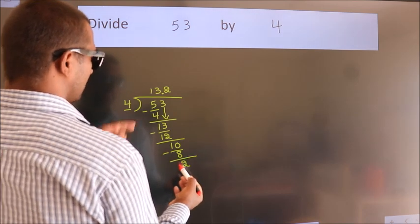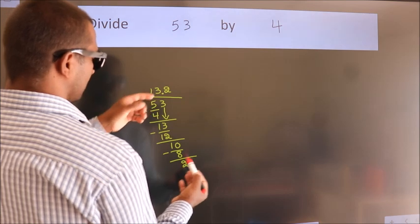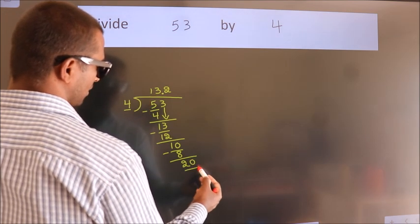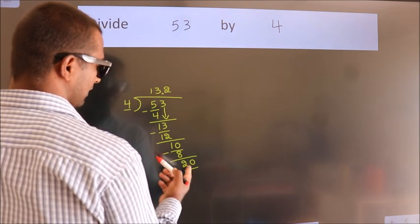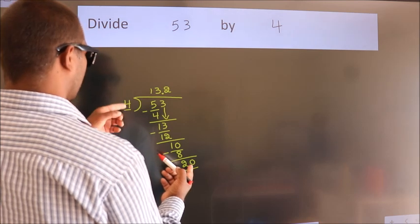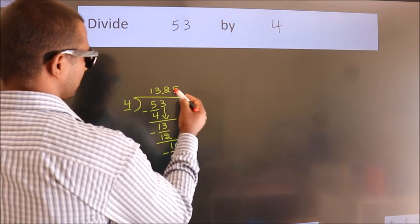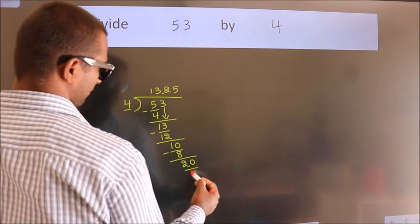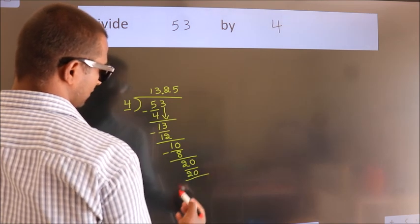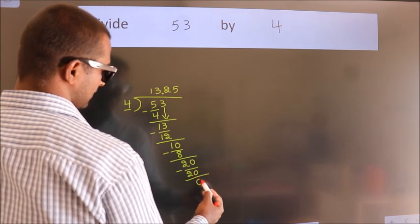After this, we already have the decimal, so directly take 0 — so, 20. When do we get 20 in the 4 times table? 4 fives is 20. Now we subtract. We get 0.